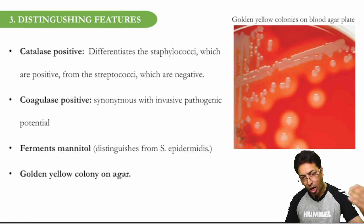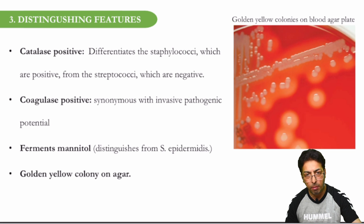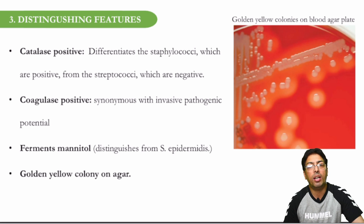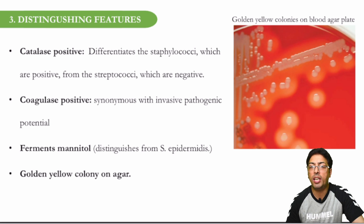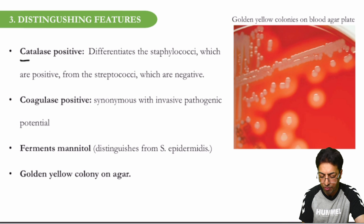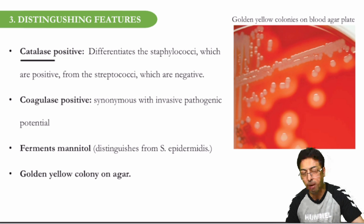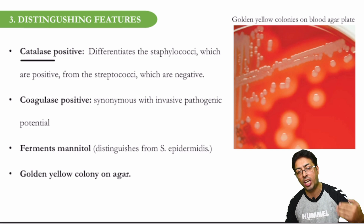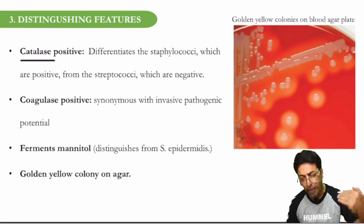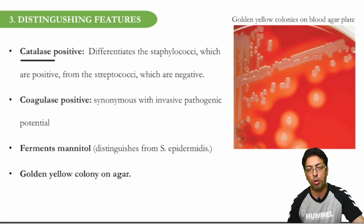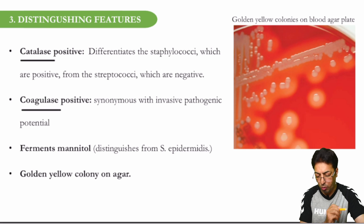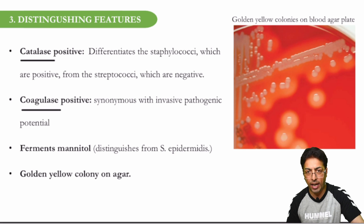Now, how do you differentiate Staph aureus from other bacteria and from other groups of Staph? You have to remember that Staph aureus is catalase positive. Catalase is an enzyme, and this is what differentiates it from Streptococcus. Streptococcus is also a very important group of organisms, and in certain cases you have to differentiate between Staph and Streptococcus. So catalase positivity is one important factor distinguishing Staph from Streptococcus. In addition, it is also coagulase positive — so two enzyme positivities: catalase and coagulase.